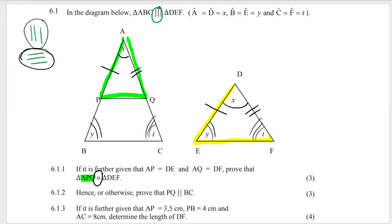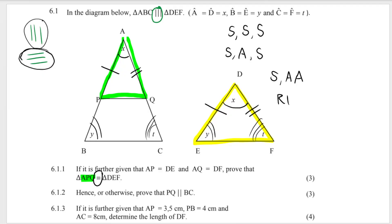Now, first of all, you need to know that in order to prove congruency, we have four different cases: side-side-side, side-angle-side, side-angle-angle, or RHS. In order to prove the two triangles are congruent, we need to look at or meet one of these cases. One of these cases will help us prove that the triangles are equal.